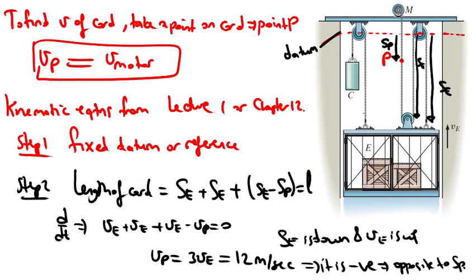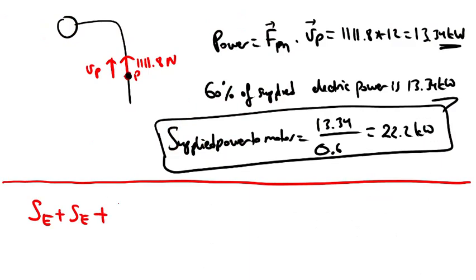and plus SE, which is this part plus that part, and then plus SE minus SP, which is equal to L. So we took this one, yes, but why didn't we